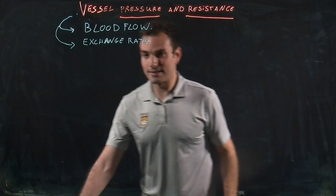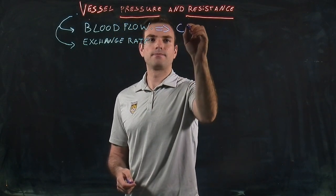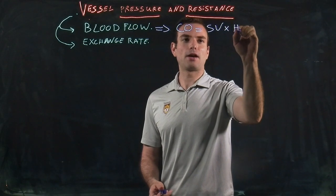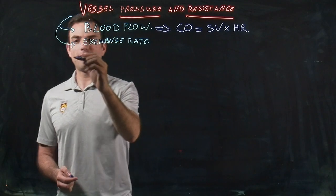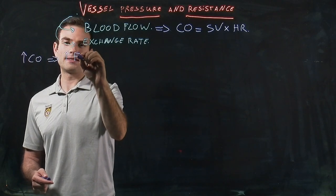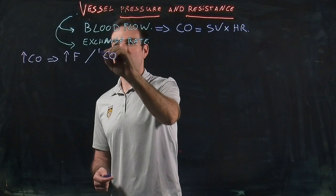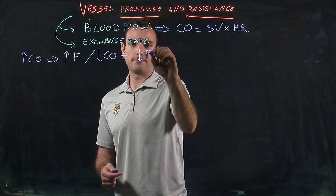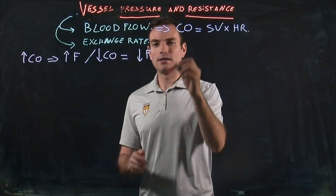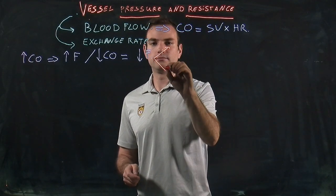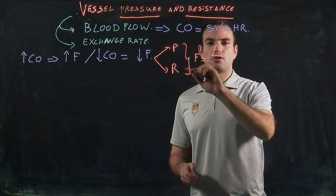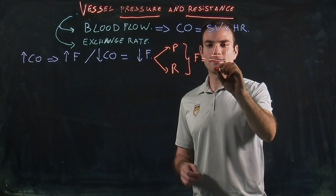So in normal circumstances, blood flow is determined by the cardiac output, and as we have seen in the previous class, cardiac output is equal to stroke volume multiplied by heart rate. So if cardiac output increases, flow also increases; and if cardiac output decreases, flow also decreases. But flow is also determined by pressure and resistance, and the flow is equal to the difference in pressure divided by the resistance.